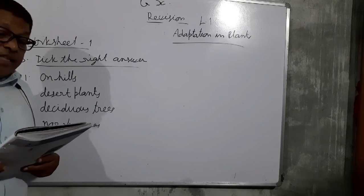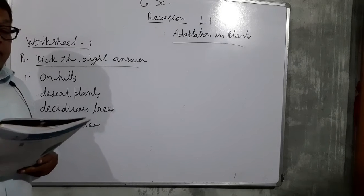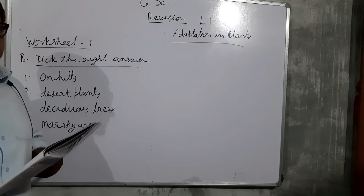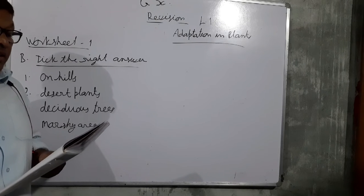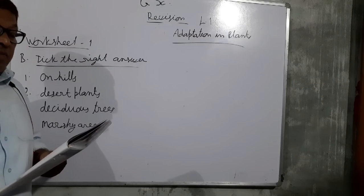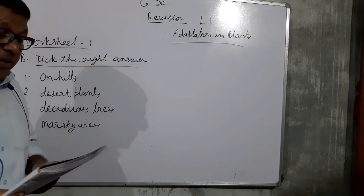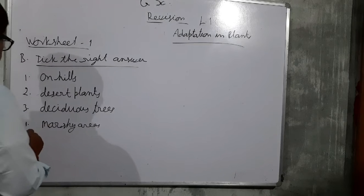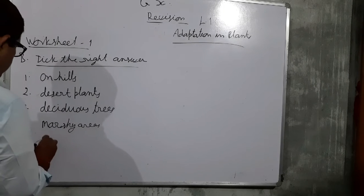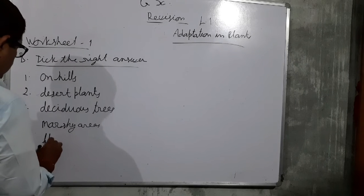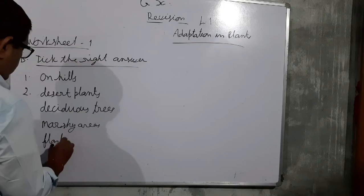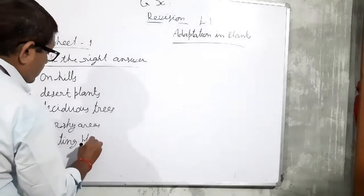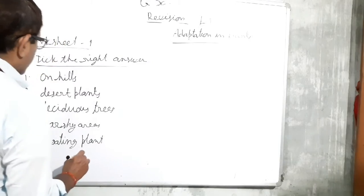Duckweed is a type of aquatic plant. There are three types of aquatic plants: floating plants, fixed plants, and underwater plants. So duckweed is a floating plant.